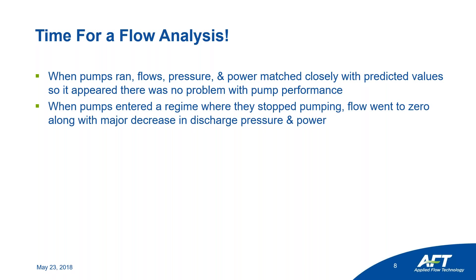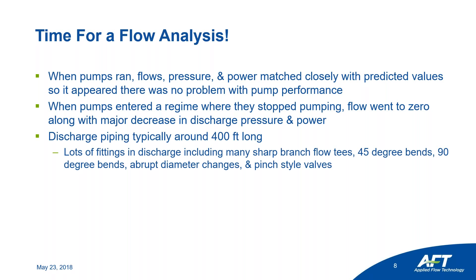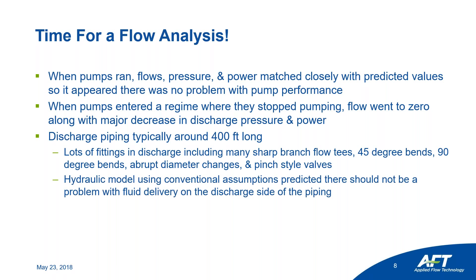However, there was a point where the pumps entered a flow regime and couldn't pump anymore — flow went to zero, with huge losses in pressure and power. They had lots of discharge piping, around 400 feet long, with many fittings: branch flow tees, elbows, diameter changes, several types of valves — lots of losses. When they modeled their minor losses with standard K-factor methods from handbooks or built into Fathom, the model showed there should not be a problem with fluid delivery on the discharge side.